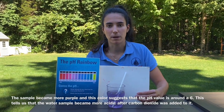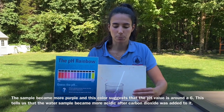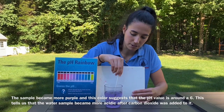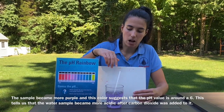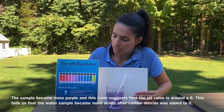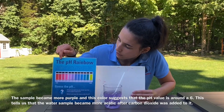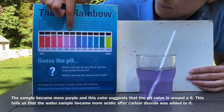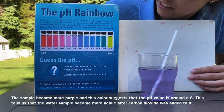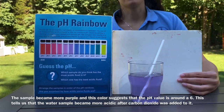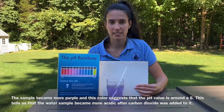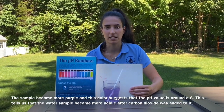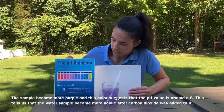The water sample had carbon dioxide put into it, and as you can see the water sample got a little bit more purple, which tells us using the pH rainbow that its acidity is now at a pH of around 6. This shows us how the water sample got more acidic after blowing carbon dioxide into the water.